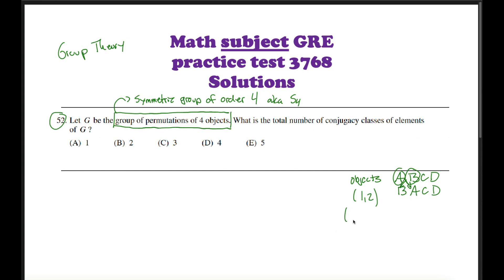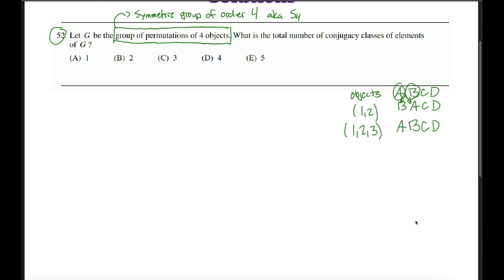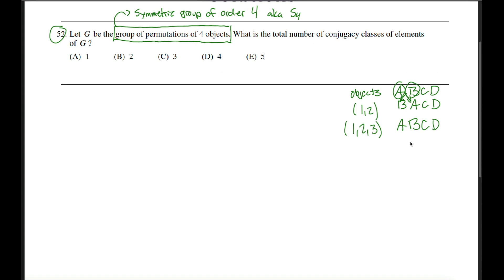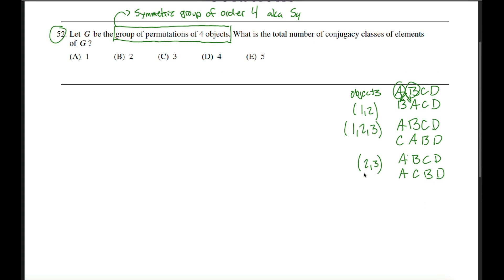Another element of this group would be (1 2 3), which we can think of as taking A, B, C, D and moving the one from the first position to the second, the one from the second position to the third, and the one from the third back to the first. D doesn't get moved at all, still in the fourth position. We can also consider the element (2 3) — that would move A, C, B, D, just taking the second object and moving it to the third spot, and vice versa.